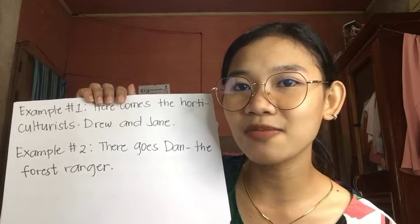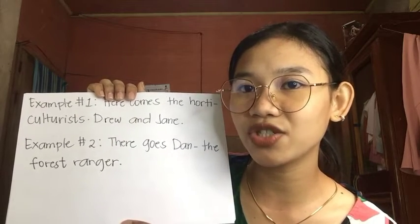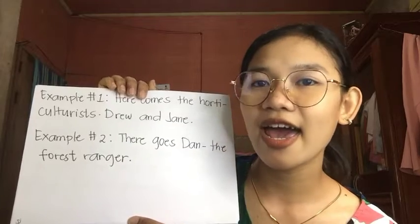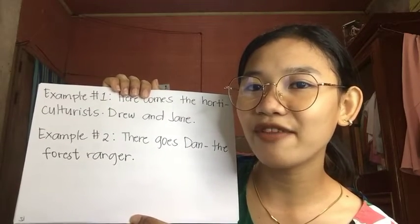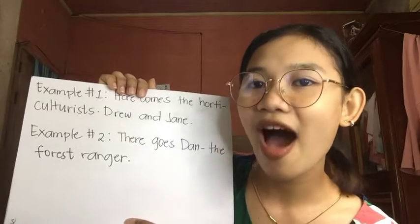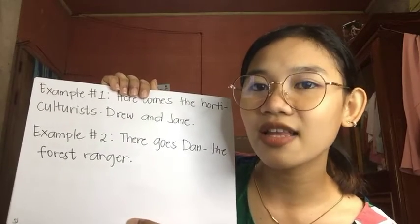Rule number twelve: the words 'here' and 'there' have generally been labeled as adverbs even though they indicate place. Sentences beginning with 'here' or 'there' require a verb depending on the number of the noun that comes after them. For example, 'Here comes the horticulturist, Drew and Jane.' Second example: 'There goes the forest ranger.' In example one, we have the verb 'comes' and the noun 'horticulturist.' In example two, the verb is 'goes' and the noun is 'forest ranger.'